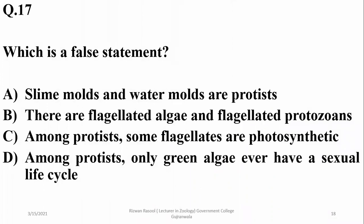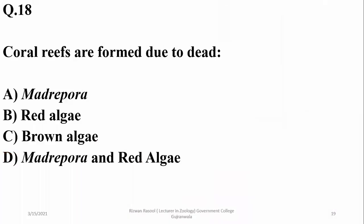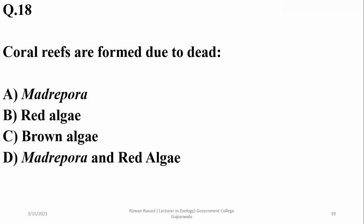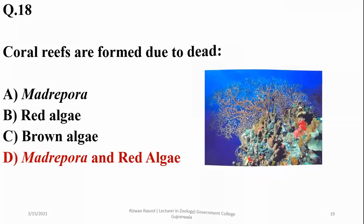Which is a false statement? Slime molds and water molds are protists — true. There are flagellated algae and flagellated protozoans — true. Among protists, some flagellates are photosynthetic and may be a type of algae — true. But the statement that only green algae have a sexual life cycle is false, because there are other examples among protists that also have a sexual life cycle.